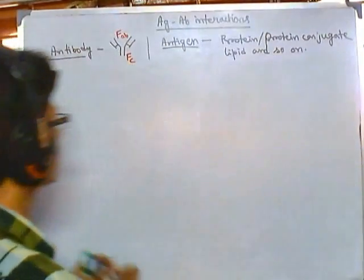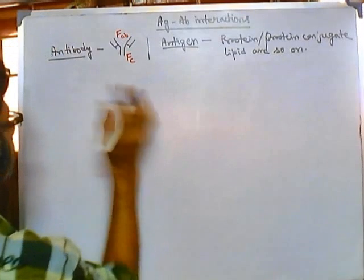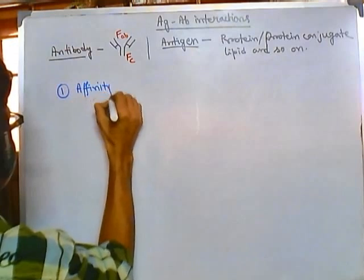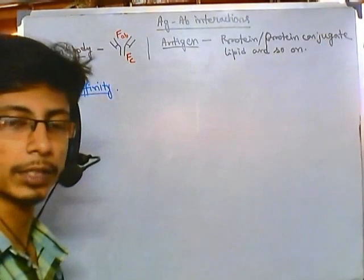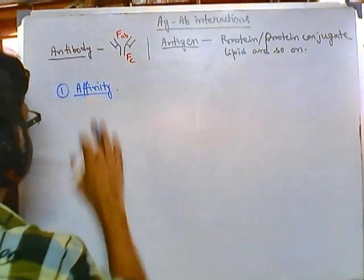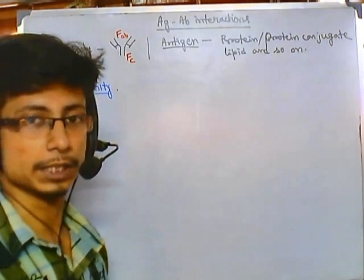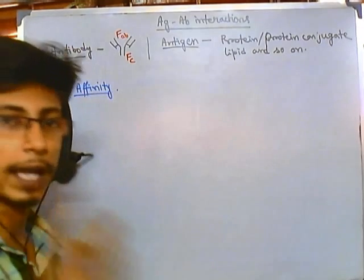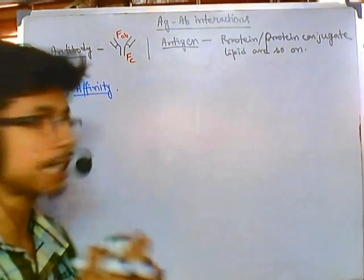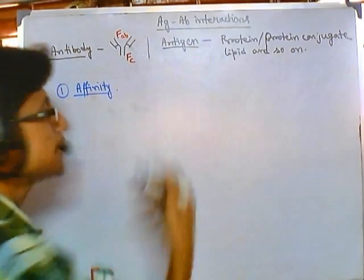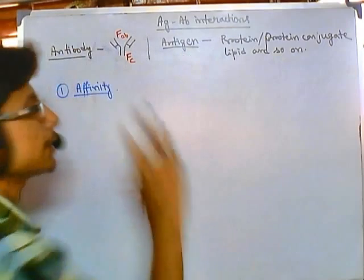Before going into this detail, we must know some nomenclature. The first term we need to look at is the distinction between affinity and avidity. Affinity for an antibody simply means the number of antigens that are going to interact with that antibody. So if you are talking about one antibody, its affinity refers to how strongly it is interacting with a particular antigen — what is the affinity of that antibody for that antigen.